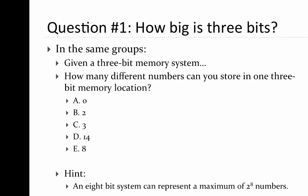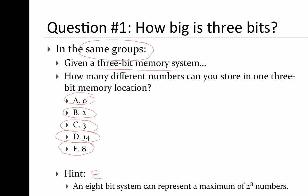Next, we will use the Scantron bubble sheets to answer a series of questions, again working in groups of three. Here's the first question: given a 3-bit memory system, how many different numbers can you store in a single 3-bit memory location? Could it be zero, two, three, fourteen, or eight different numbers? The hint is that an 8-bit system can represent a maximum of 2 to the 8th numbers — so think about that.